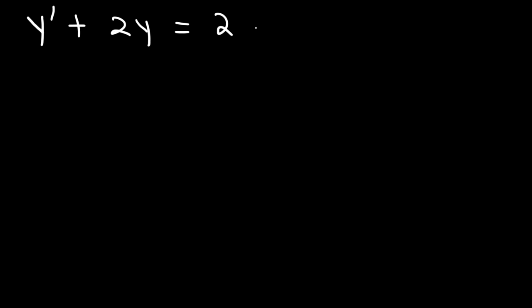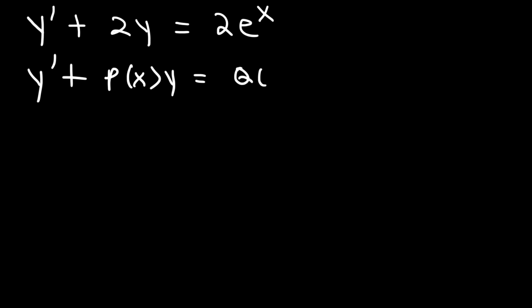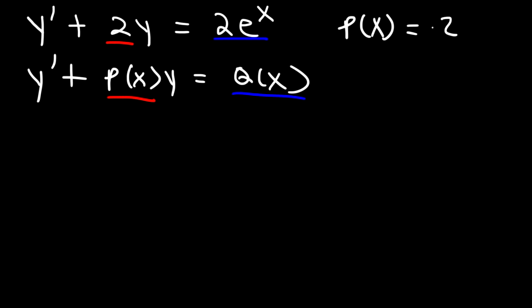Now let's work on some problems. If we have y prime plus 2y equals 2e to the x, notice that this equation is already in standard form: y prime plus p of x times y equals q of x. We can see that p of x equals 2 and q of x equals 2e to the x.